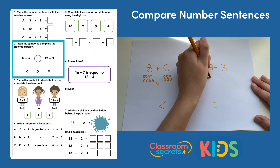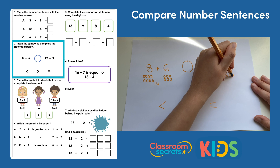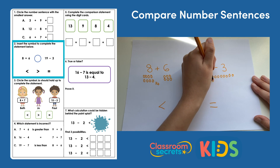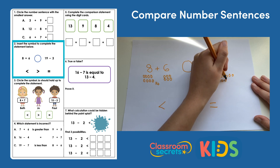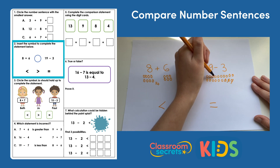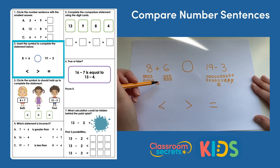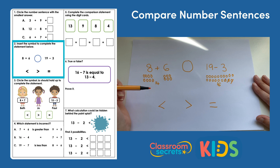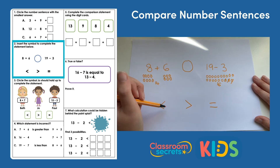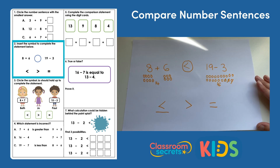Now for 19 take away three. And I'm crossing out three. One, two, three, four, five, six, seven, eight, nine, ten, eleven, twelve, thirteen, fourteen, fifteen, sixteen. So now I've got 14 and 16. I know which symbol I need to put in. 14 is smaller than 16, so that's the symbol that I need.